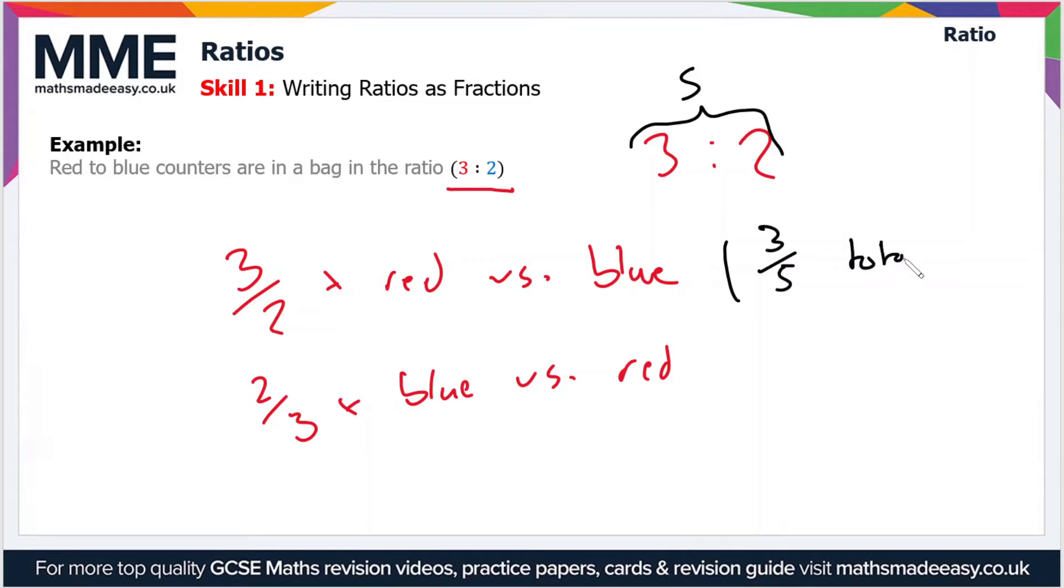That's 3/5 of the total are red, and then for blue counters we can say that there are 2/5 of the total are blue.